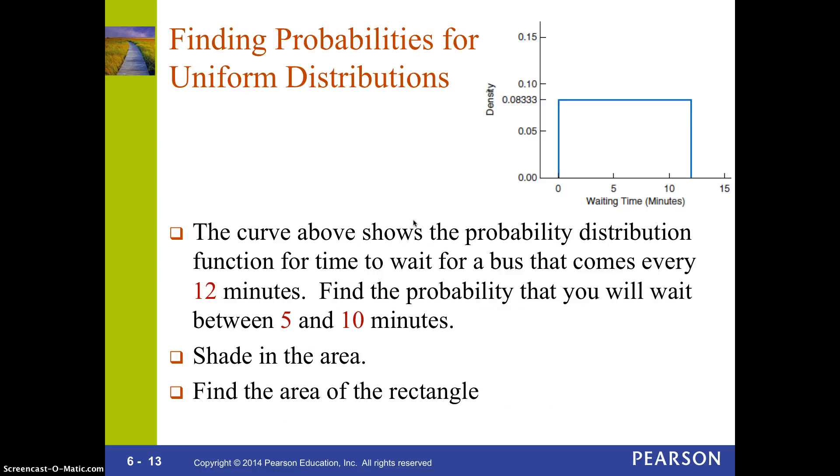So, this is an example of a uniform distribution. So, this curve here is actually this line. It shows the probability distribution function for the time to wait for a bus that comes every 12 minutes. So, first thing, if it comes every 12 minutes, your waiting time has to be between 0 and 12. Because you can't wait 13 minutes if it's coming every 12 minutes. Remember, the area under the curve has to be 1. So, this has a distance of 12. So, if you remember, the area of a rectangle is its length times its height. So, I need 12 times some height that gives me 1. So, 12 times 1/12 gives you 1, and 1/12 written as a fraction is that .0833. So, that's how this number was determined. Because it has to be 1/12 so that the area of the whole rectangle ends up being 1.